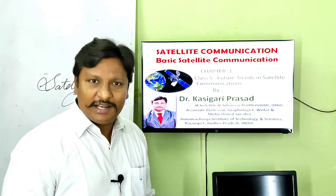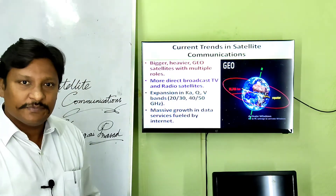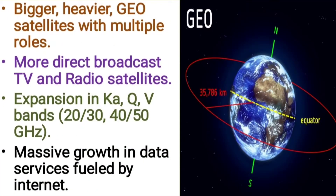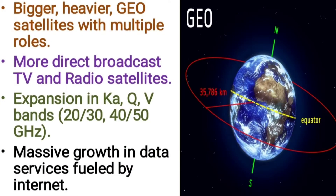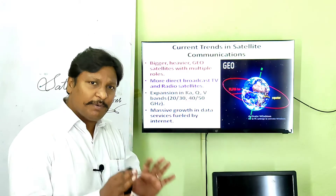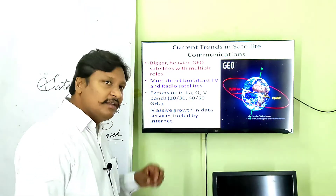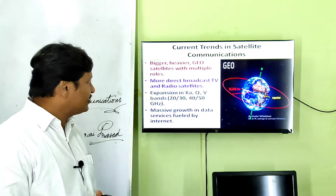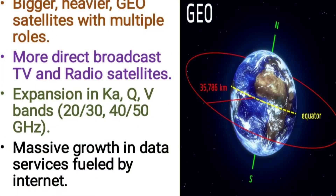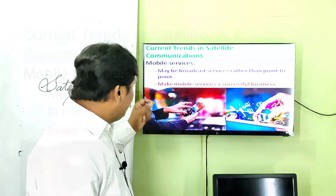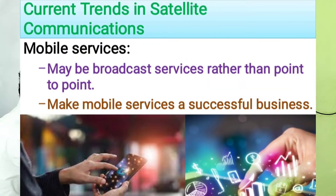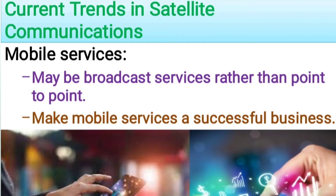What are the various future trends we can expect from satellite communications? First, let us look at current trends. Currently, satellites are bigger, heavier, and placed in geostationary orbit with multiple roles. They perform direct broadcasting, television and radio satellite services, and different uplink and downlink sessions. Mobile services may be broadcast services rather than point to point.